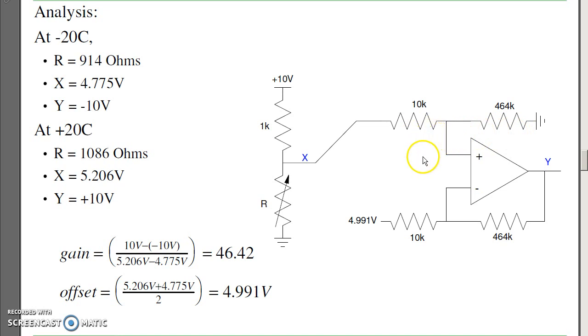And the offset. At mid-band, I want the output to be 0. At mid-band, the average of the two endpoints is 4.991 volts. That's my offset.